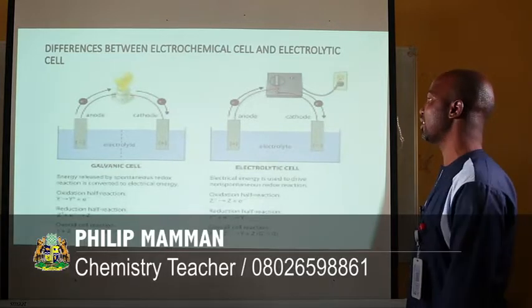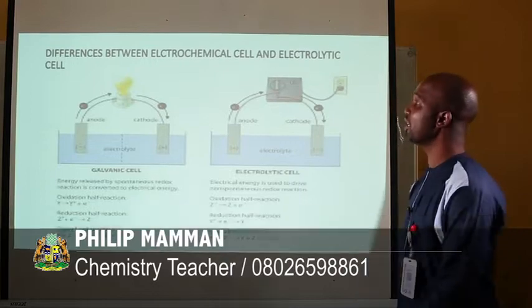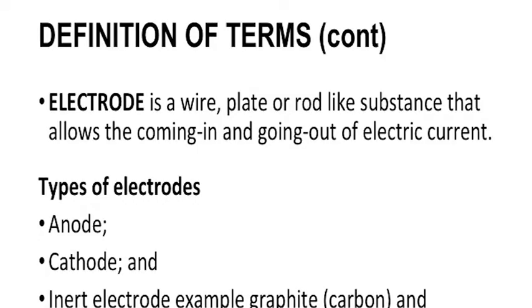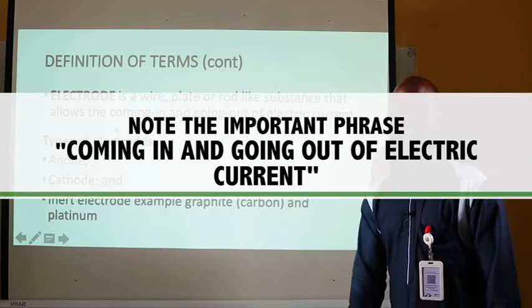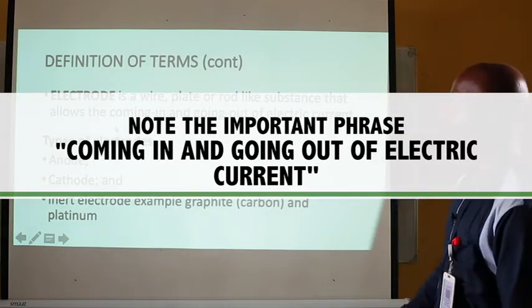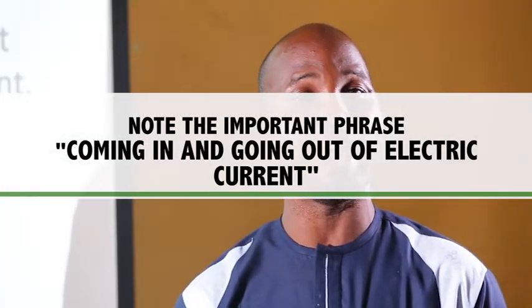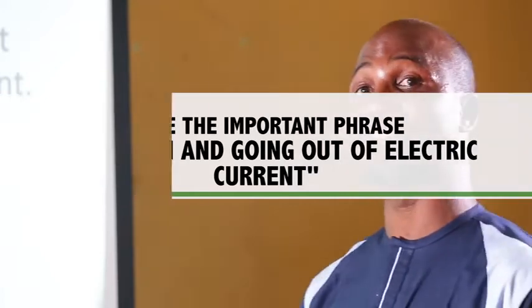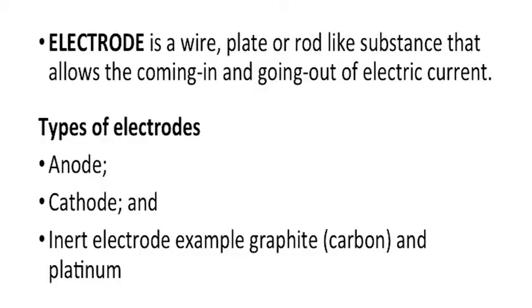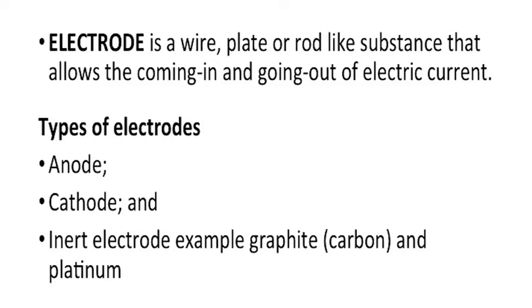There are many other differences between the electrolytic cell and the electrochemical cell. I'd like to proceed by defining other concepts. The electrode is a wire-like, rod-like, or plate-like substance that allows the coming in and going out of electric currents. Students often use the word 'passage' instead of 'coming in and going out,' but exam bodies are more comfortable with 'coming in and going out.' There are three basic types of electrode: the anode, the cathode, and the inert electrode. The inert electrode is inactive and does not participate during electrolysis — the most common being graphite (carbon) and platinum.